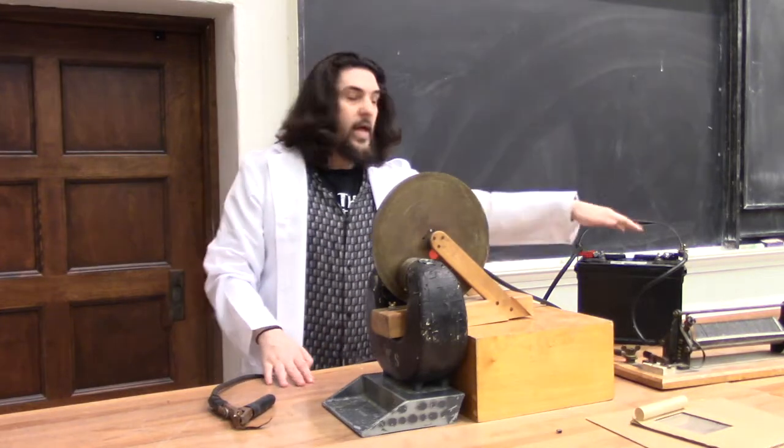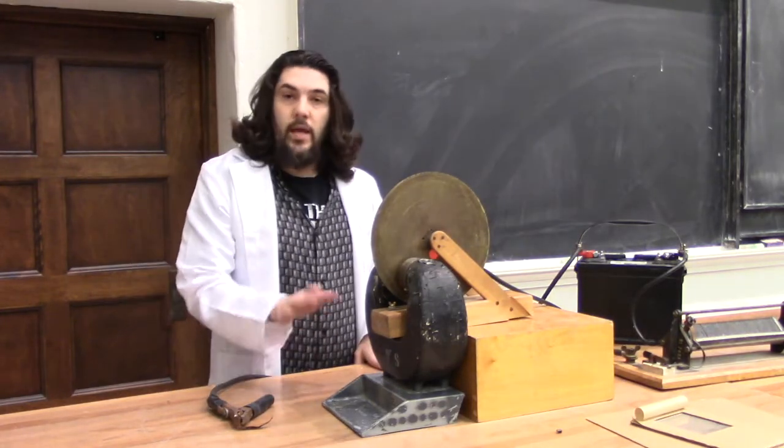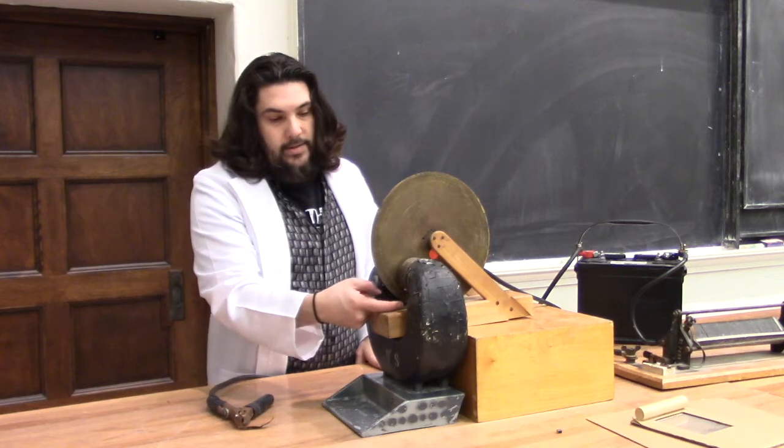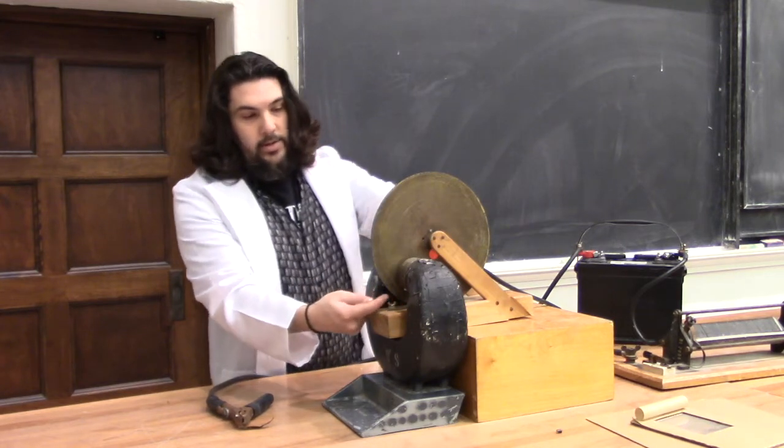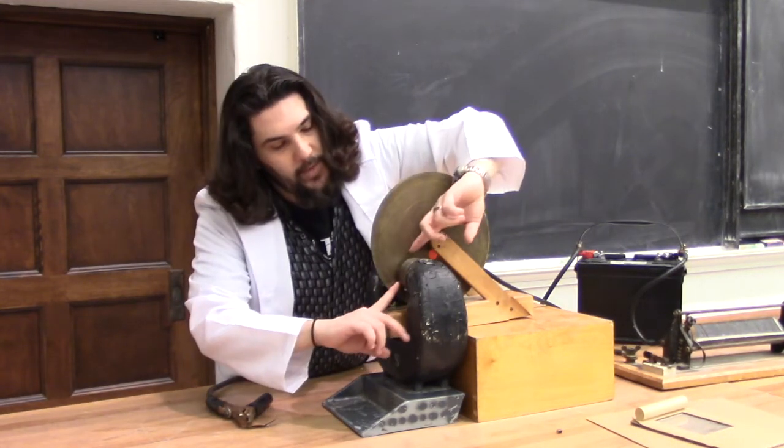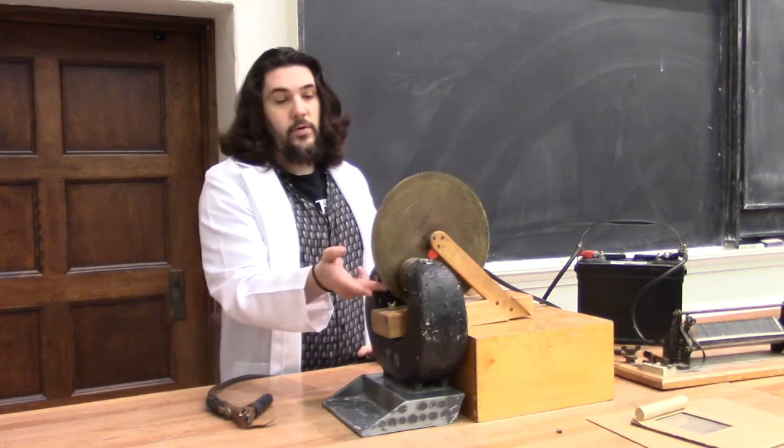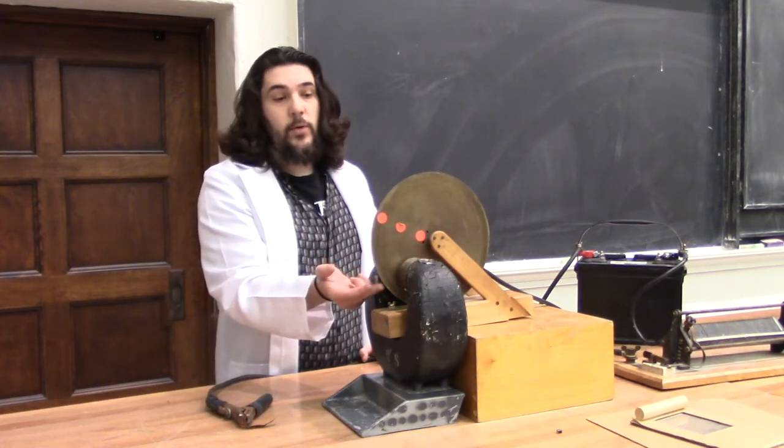The axis of the wheel is hooked up to a negative terminal on this battery, and I'm going to connect the positive terminal down here. Current is going to flow through this horseshoe magnet's magnetic field. That's going to cause a force which is going to spin the wheel.